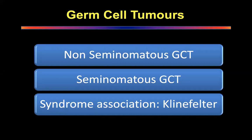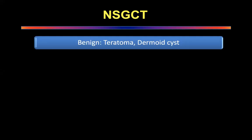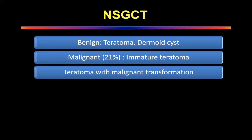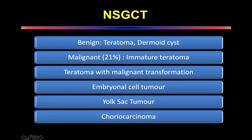Germ cell tumors are non-seminomatous or seminomatous. The commonest associated syndrome is Klinefelter's syndrome. Histopathological classification: benign — mature teratoma and dermoid cysts; malignant — immature teratoma, seminoma, and non-seminomatous germ cell tumors including embryonal cell carcinoma, yolk sac tumor, and choriocarcinoma, plus teratoma with malignant transformation.